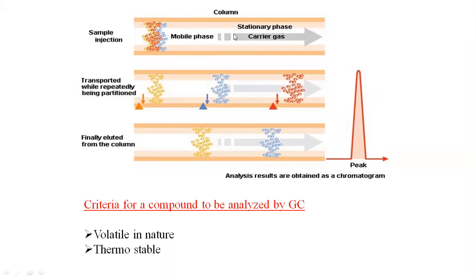If the affinity between the stationary phase and the analyte is more, they travel very slowly. Those which have less affinity travel very fast along with the carrier gas. Whichever compound is eluted first will show the first peak in the chromatogram of the gas chromatography.